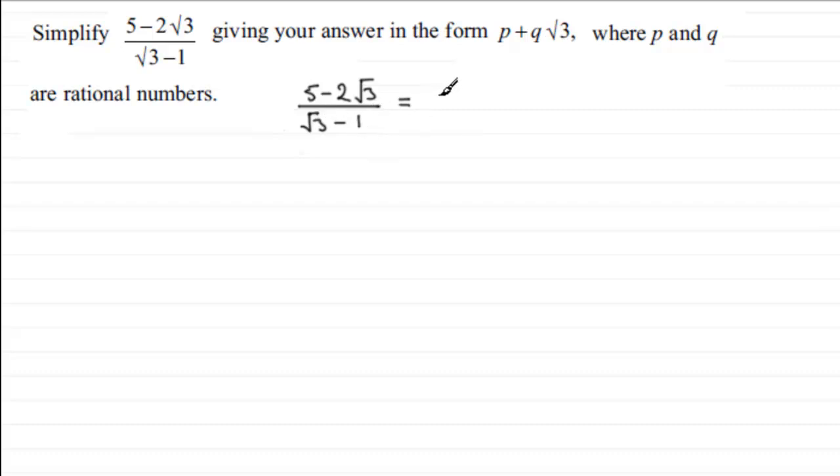So, what I do is I take my fraction again, 5 minus 2 root 3, all divided by root 3 minus 1, and I essentially multiply this by 1. And you might be thinking, well, what is that going to do? I'll just keep it the same.